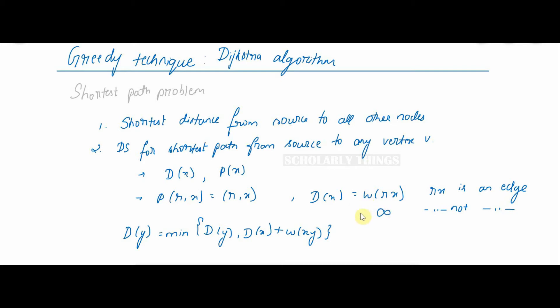For each temporary vertex Y distinct from X, set D(Y) = min{D(Y), D(X) + W(X,Y)}. This is the algorithm.